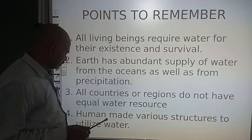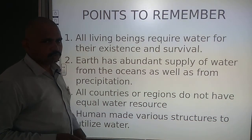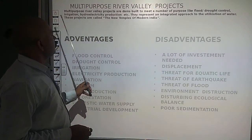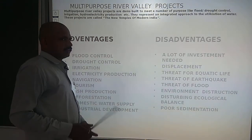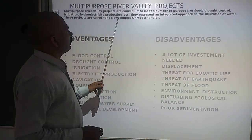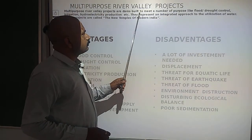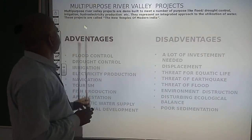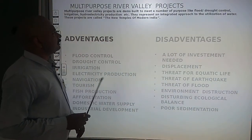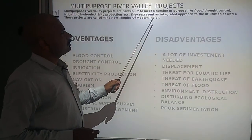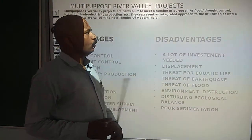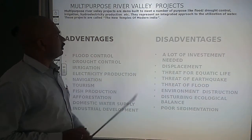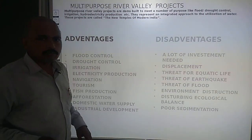Humans have made various structures to utilize water. You have to know about multi-purpose river valley projects — these are dams built to meet a number of purposes like flood control, drought control, irrigation, and hydroelectricity production. They represent an integrated approach to the utilization of water, and that is why these projects are called the new temples of modern India.